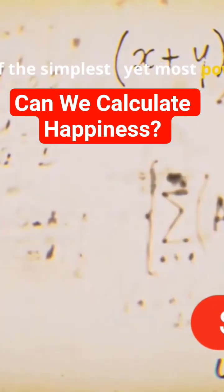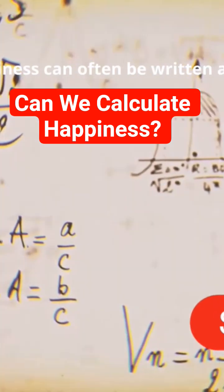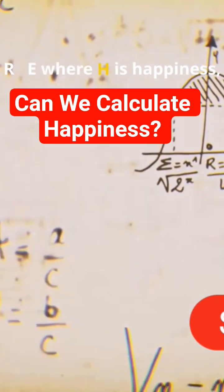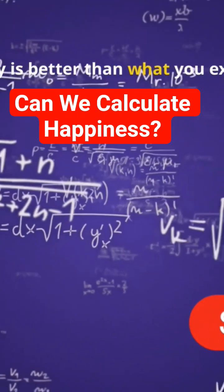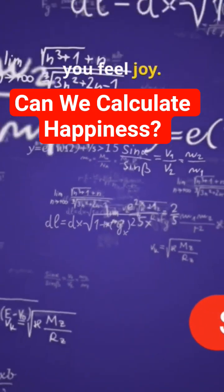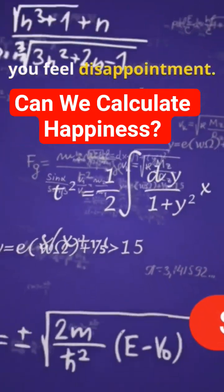One of the simplest, yet most powerful, happiness formulas comes from expectations. Happiness can often be written as H equals R minus E, where H is happiness, R is reality, and E is expectations. If reality is better than what you expected, you feel joy. If it's worse, you feel disappointment.